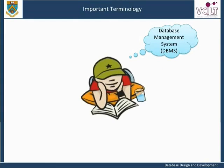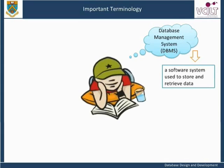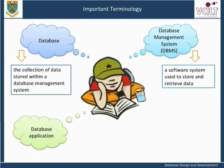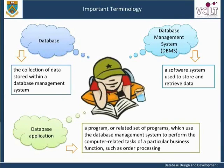The term database management system, often abbreviated to DBMS, refers to a software system used to store and retrieve data. The software of such systems is complex, consisting of a number of different components, which are described later in this unit. Another commonly encountered term is simply the word database, which usually refers to the collection of data stored within a database management system. The term database system is usually an alternative term for database management system.